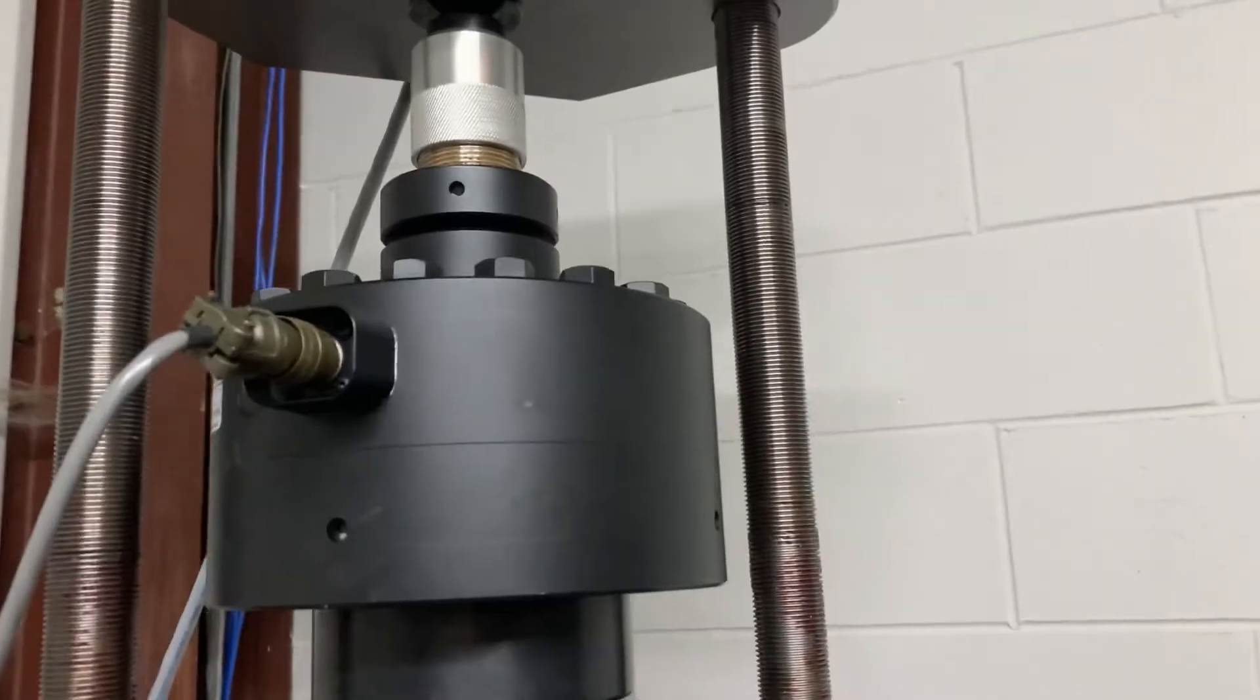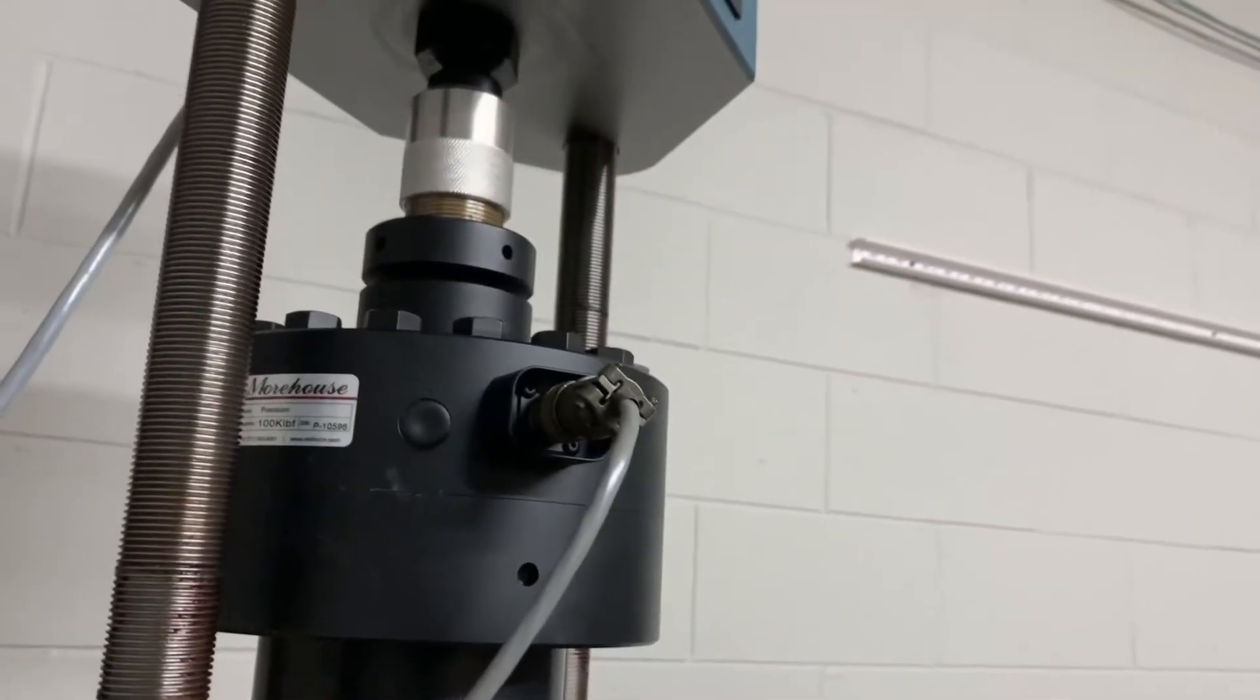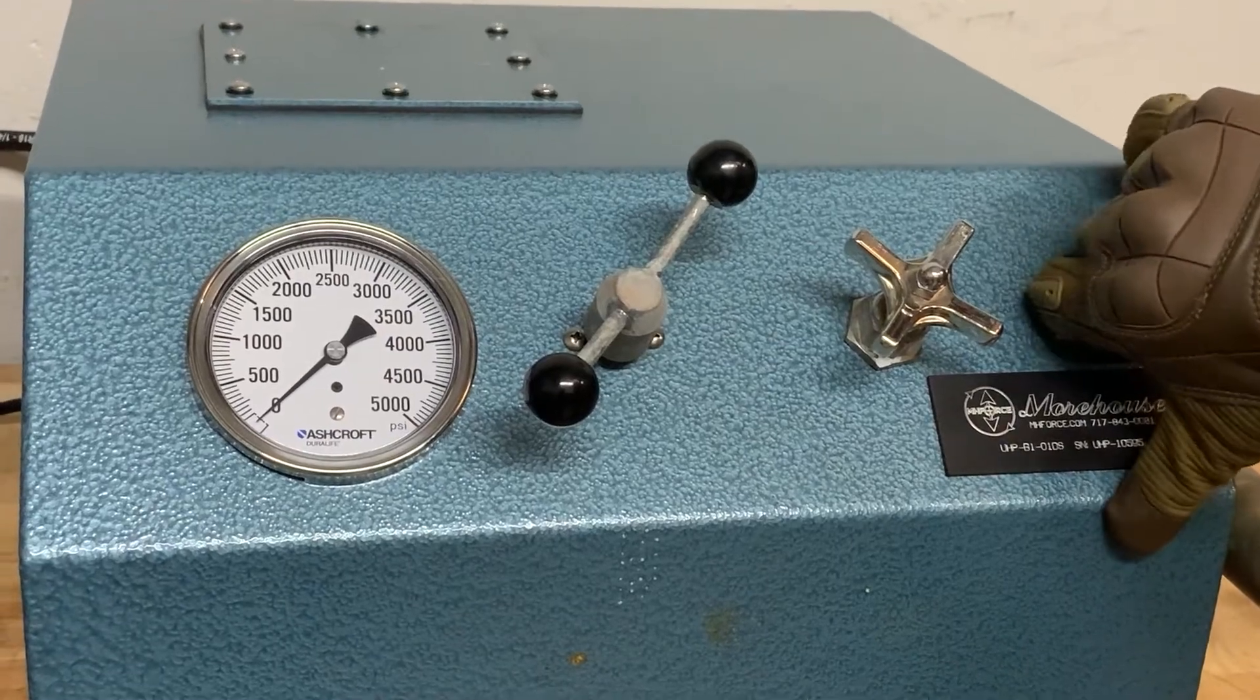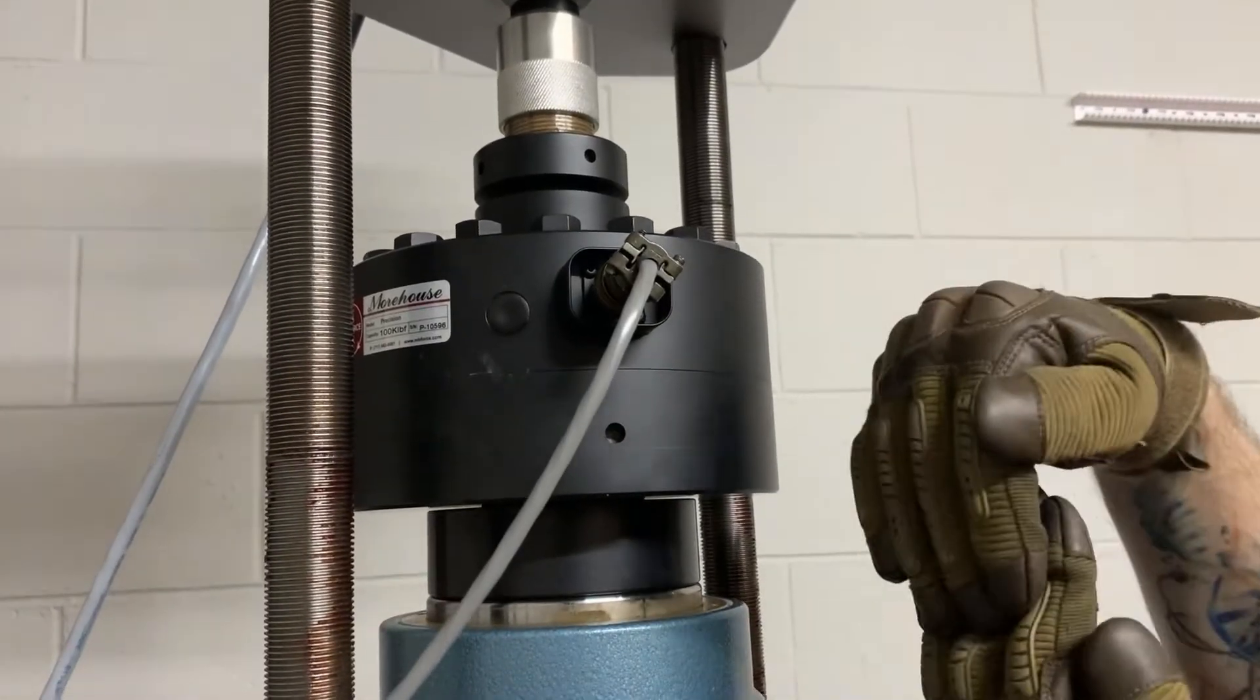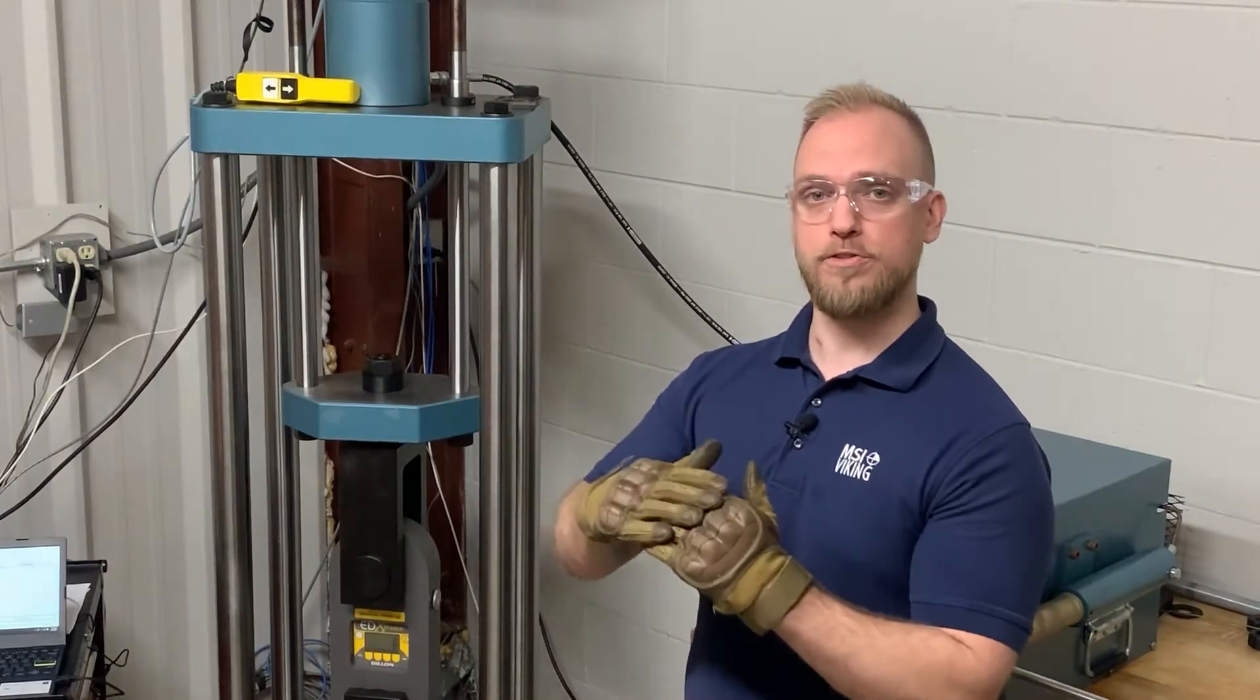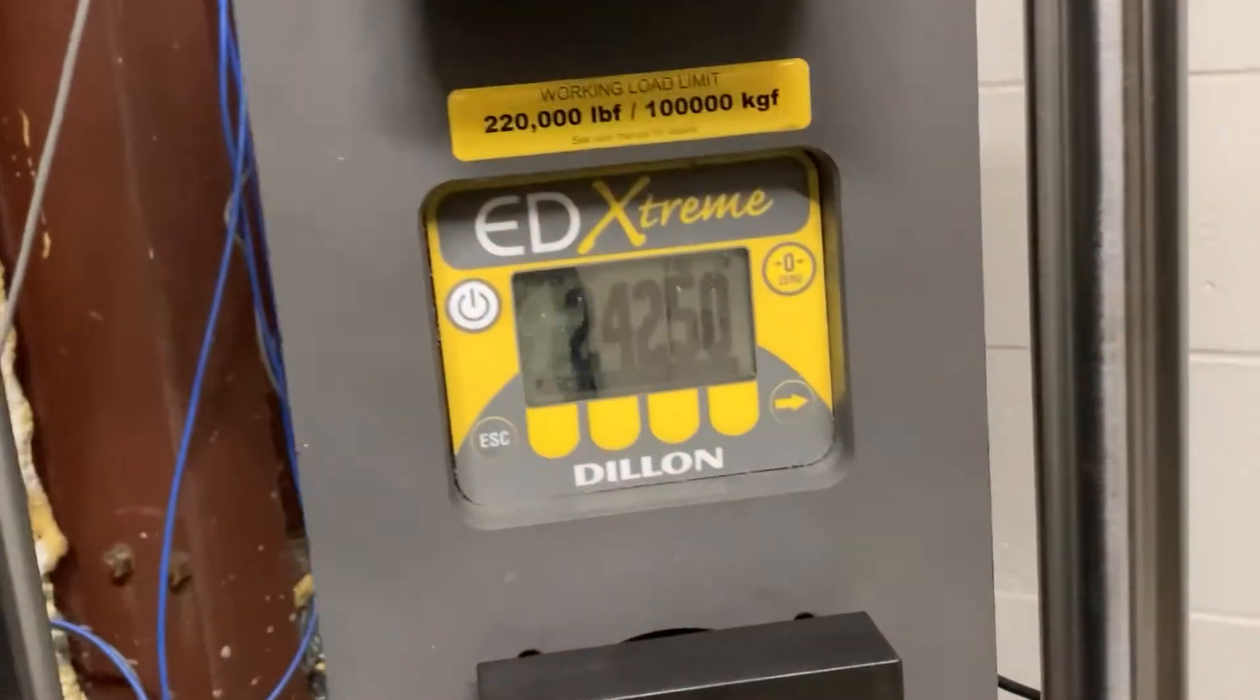Basic fundamentals of how this machine operates is you're given a reference load cell that's put up at the top in between the upper platen and the upper yoke. How it functions and operates is off of a hydraulically driven system, otherwise known as a RAM, that compresses force onto the reference load cell, and that will provide the force that we will compare our device under test to.